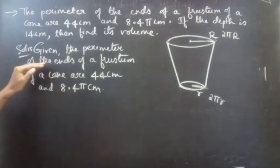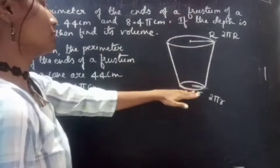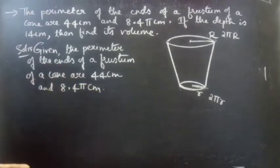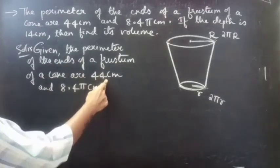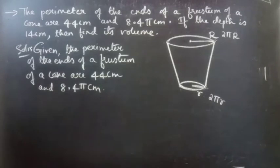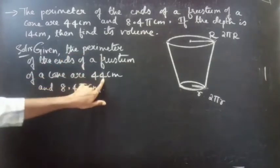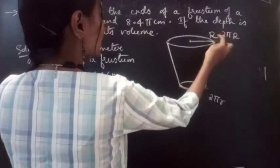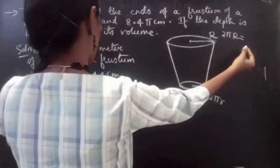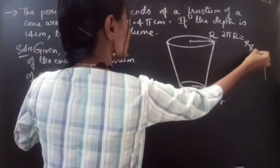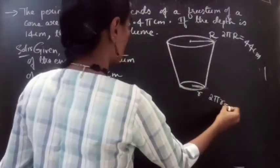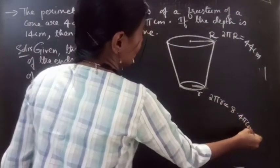We are given the perimeter of the ends of the frustum of a cone are 44 cm and 8.4π cm. Since perimeter is nothing but circumference, we have: 2π capital R equals 44 cm, and 2π small r equals 8.4π cm.